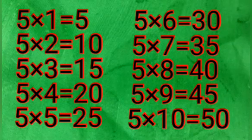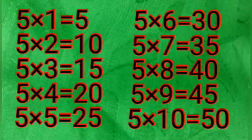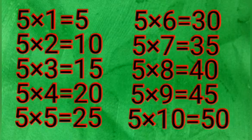Come on, let's recap. Five ones are 5. Five twos are 10. Five threes are 15. Five fives are 25.